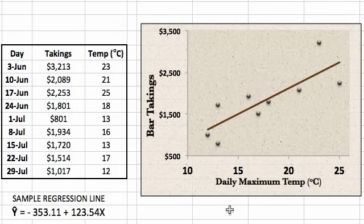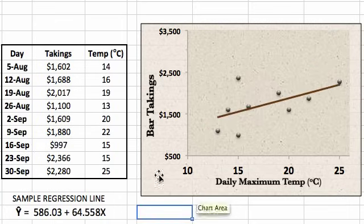If we took nine new observations, say the next nine Fridays at the pub—here we go, we've gone from August to September now—we're going to get a completely different regression line. Here you can see that the constant term changed, as did the slope coefficient. What both of these samples are doing are trying to estimate the true effect of temperature on bar takings.